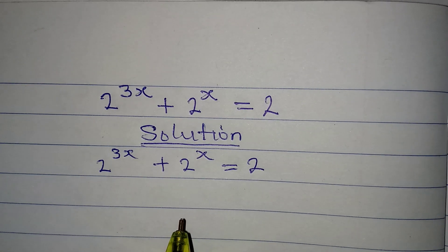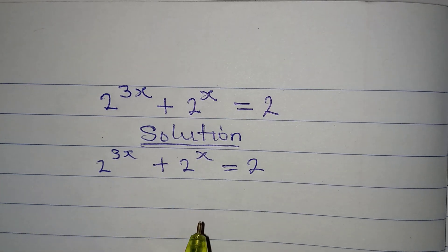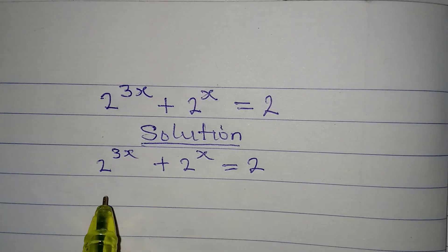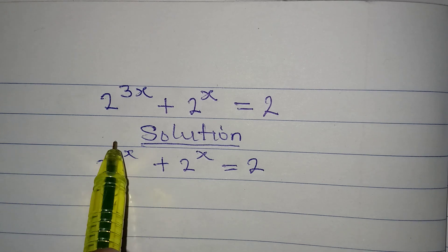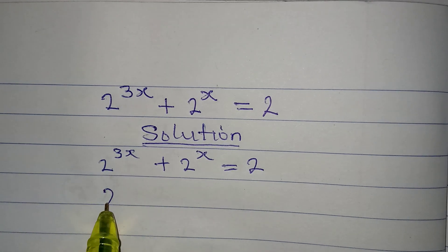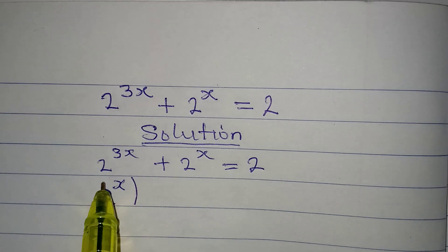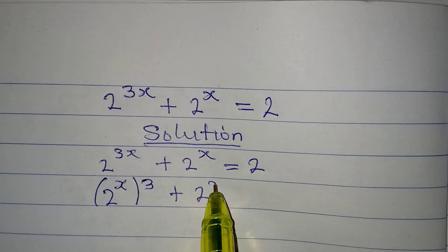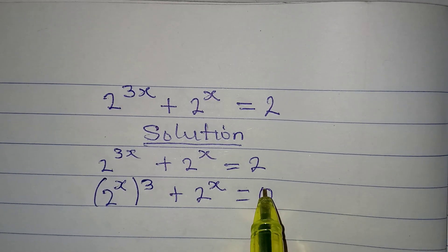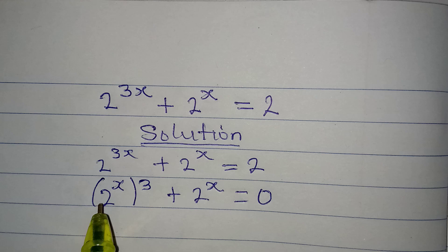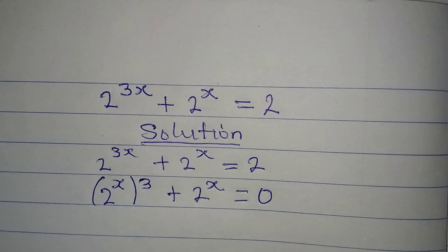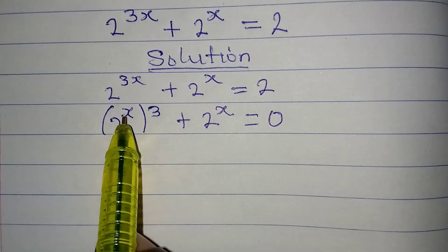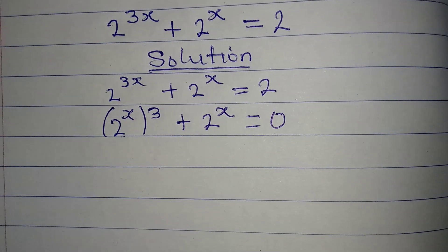We are only going to find the real solution to this problem. What we'll do first is rearrange the power — we have 2 to the power of x, to the power of 3, plus 2 to the power of x equals 0. Remember, if you expand this bracket you will get the original expression back.